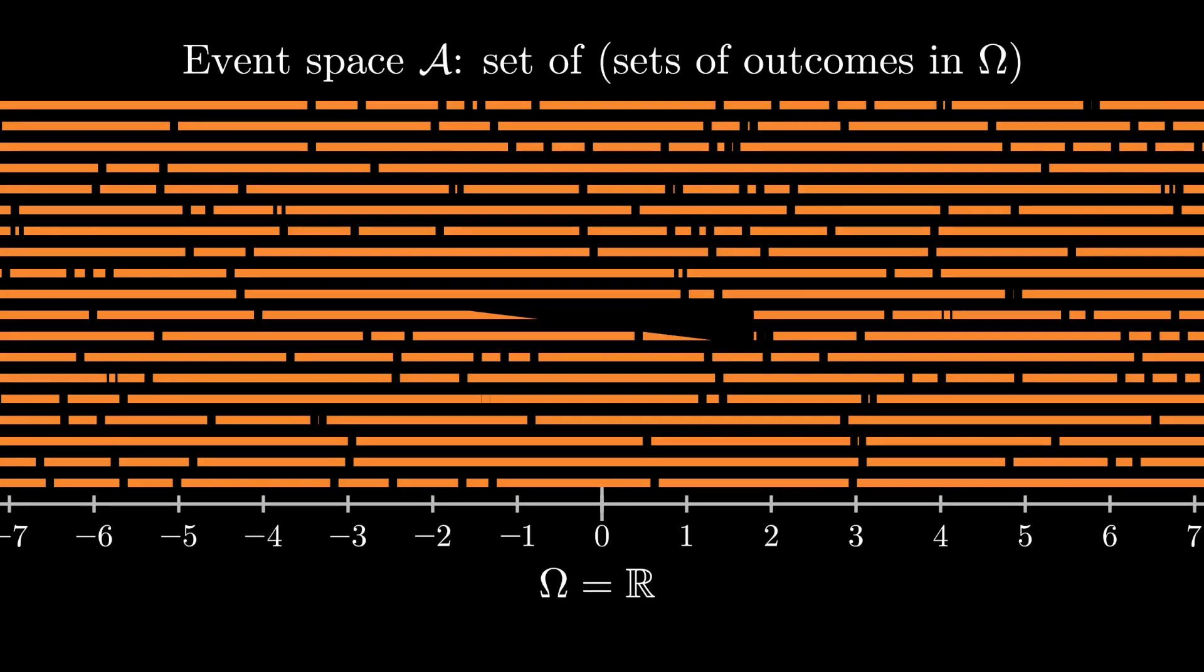As a result, the event space we tend to like for continuous sample spaces is the one generated from all of the open subsets of that sample space. This gives us an object that's sometimes called a Borel sigma algebra. For our purposes, you don't really need to worry about this level of detail, but it's good to know what somebody's talking about when they use those words.